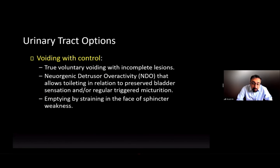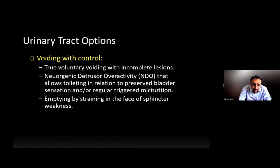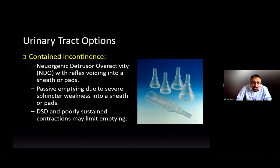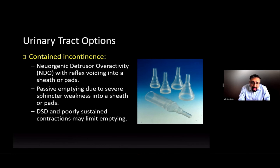Voiding with control can take different forms depending on the level and type of injury. True voluntary voiding occurs only in incomplete lesions. With neurogenic detrusor overactivity, toileting is possible in relation to preserved bladder sensation, coupled with regular triggered micturition relying on intrinsic contractions. Emptying by straining in the face of sphincter weakness is another possibility, particularly with a more flaccid bladder. Contained incontinence — voiding into a sheath or pads — is an option with reflex voiding or severe sphincter weakness, unless detrusor-sphincter dyssynergia or poorly sustained contractions limit this.